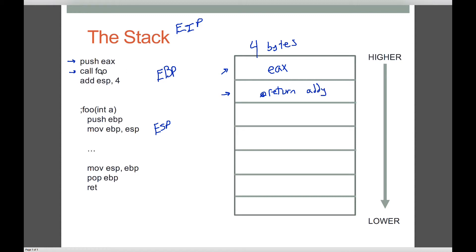We also put the address of foo into EIP. Normally executing an instruction just moves EIP to the next instruction, but with a call we have a change in flow — EIP points to that function's location and starts executing instructions there. So we've modified the stack, EIP is now at foo, and we're going to execute instructions for this function. Here's our prologue and here's our epilogue. We enter the function; ESP is pointing at the return address. We still don't care where EBP is — we push EBP.